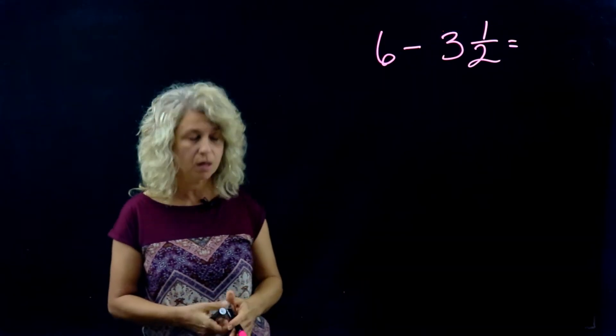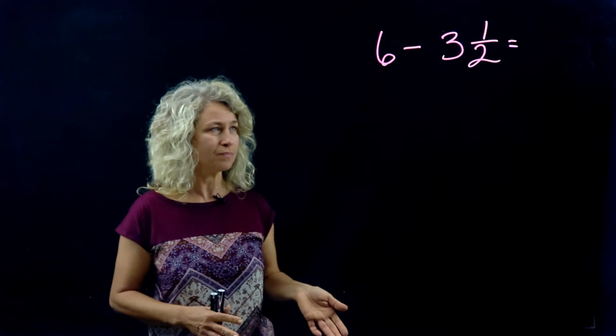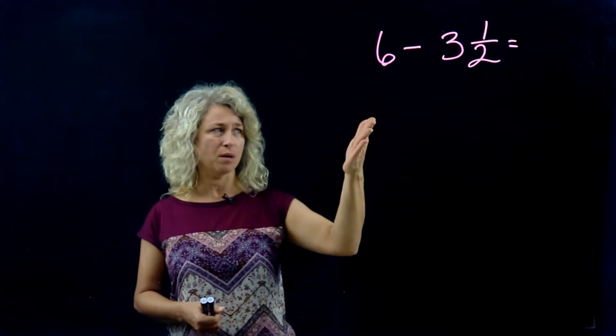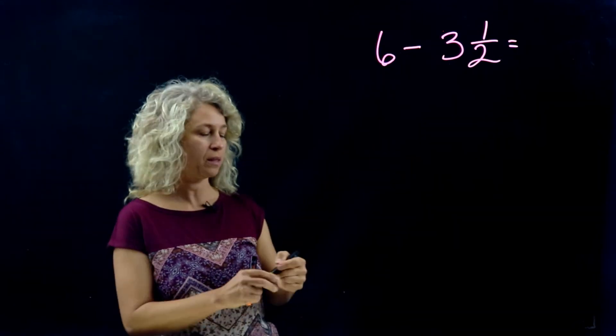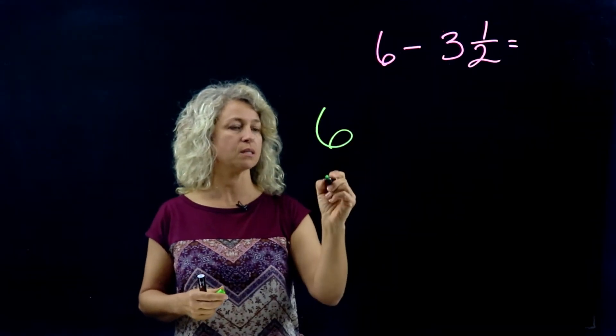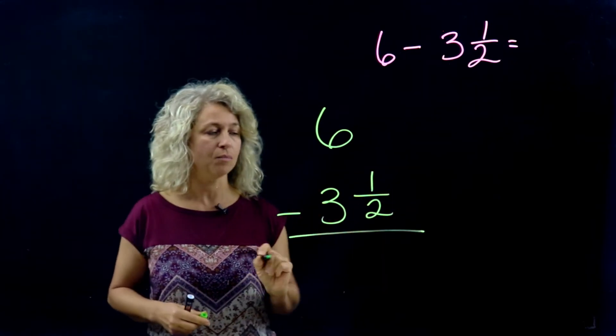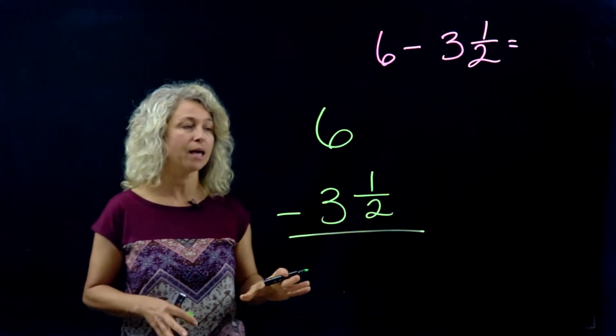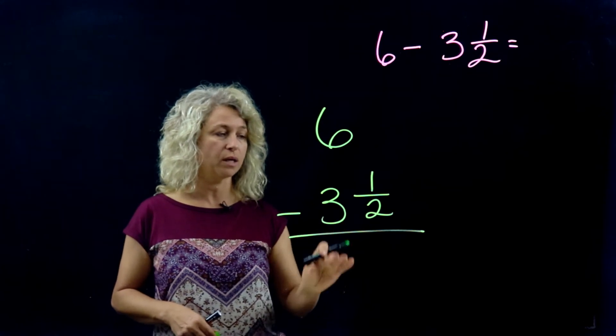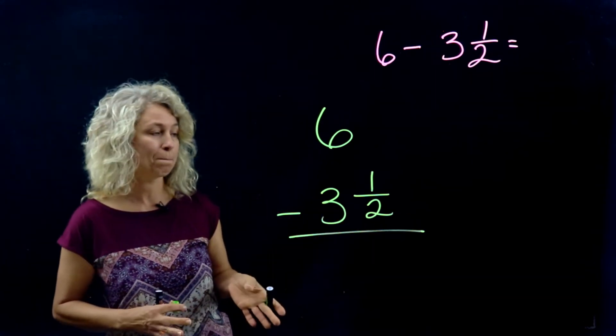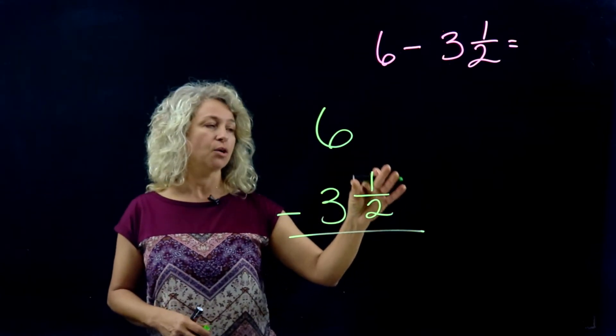Here is our last example that we'll work together. This one is different in that we have a whole number and we're subtracting a mixed number. So let's rewrite the problem: the whole number 6 minus 3 1/2. Now the most common mistake would be to just say bring down the 1/2, 6 minus 3 is 3, 3 1/2 is my answer. But that would not be correct, because when you're subtracting you have to think, what am I taking 1 away from? I can't take 1 away from nothing.